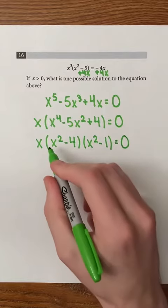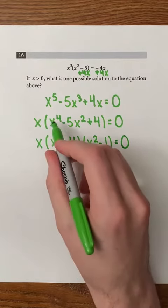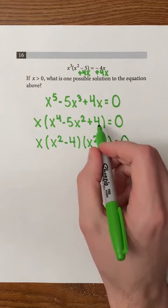We're using these x squareds because the original expression has x to the power of 4, x squared, and then no x.